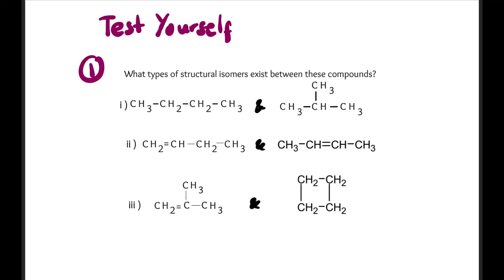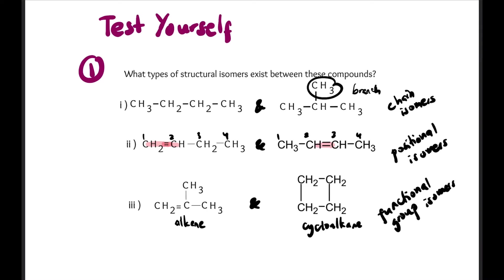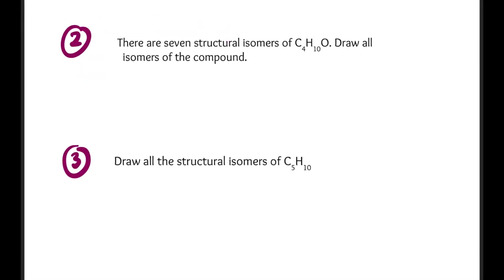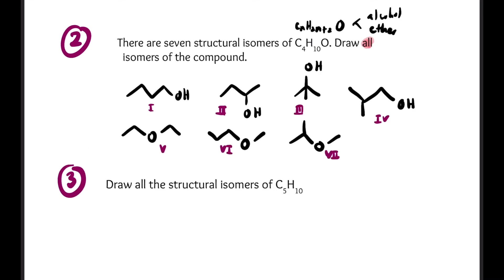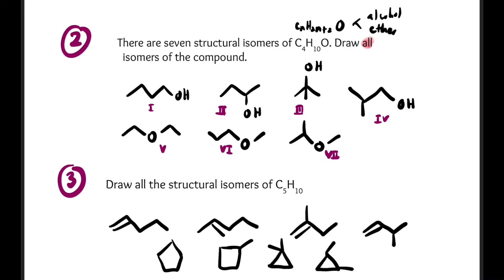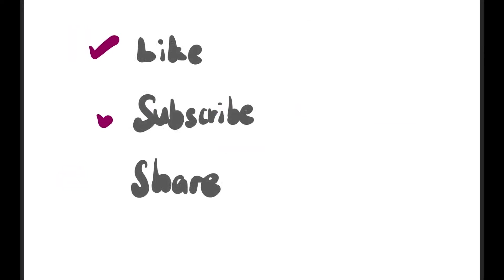Test yourself with this question: what type of structural isomers exist between these compounds? And here is the answer with some notes. The next question: there are 7 structural isomers of C5H10 — the answers include both alkenes and cycloalkanes with branching. Don't forget to like, subscribe, and share, and turn on the notification bell so you know when we go live. Bye!